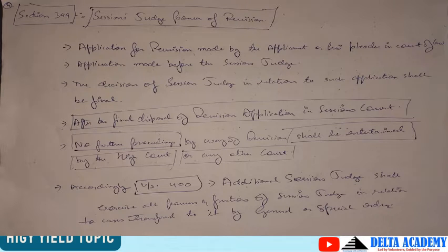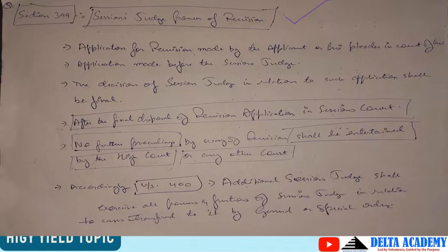Section 399 baat karta hai Sessions Judge ki power of revision. Jab bhi final order ya judgment pass hota hai kisi court ke dwara — chahe criminal court ho ya civil court ho, under CrPC ho ya CPC ho — hamesha final order ke baad hi review, revision, ya appeal daali ja sakti hai. Review hamesha usi court mein padega jis court se final order aaya hai. Revision hamesha higher court of law mein padegi, aur appeal applet provisions ke according.